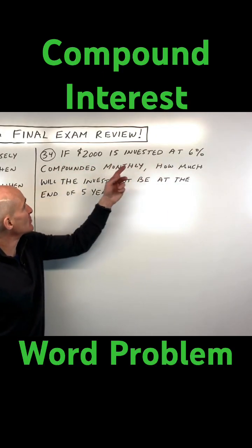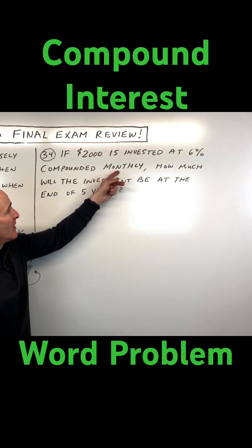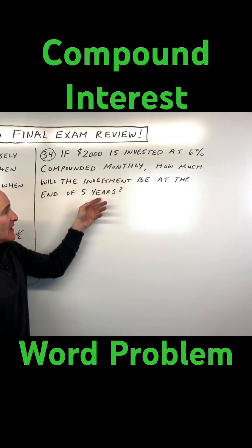If $2,000 is invested at 6% compounded monthly, how much will the investment be at the end of five years?